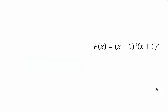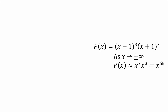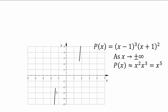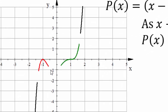Let's review. For (x minus 1)^3 times (x plus 1)^2, as x goes to positive or negative infinity, the function behaves like x^3 times x^2 equals x^5. Since x^5 is an odd power, the left hand corner is down and the right hand corner is up. At x equals 1, the graph has a cubic shape; at x equals negative 1, it has a parabolic shape.